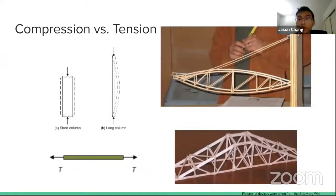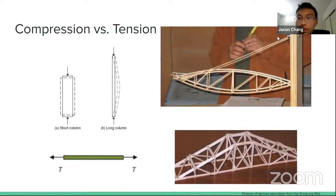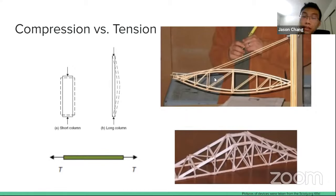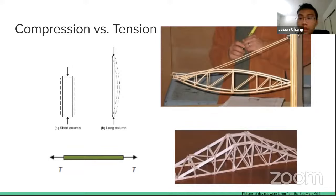There are multiple types of forces within a Boomilever — compression and tension. In a typical Boomilever, the top diagonal portion is the tension part, and the long horizontal portion is the compression. All Boomilever design is essentially optimizing the mass and strength of both the compression and tension members, and we'll go into more detail about the design for each part later.